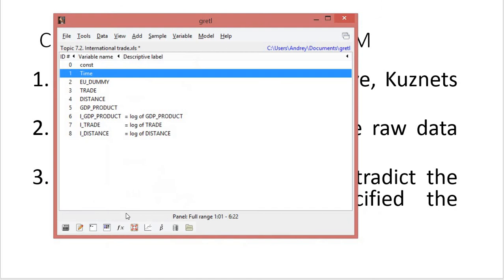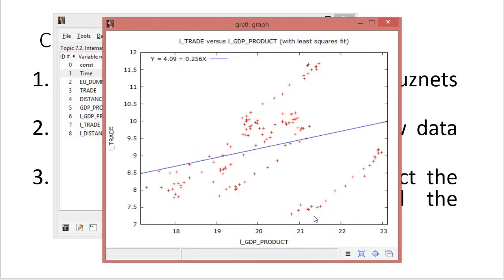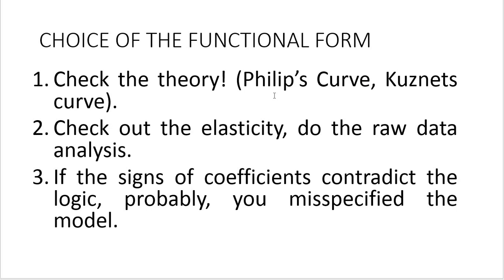So let us make another trial. And now we will analyze the relationship between natural log of trade and the log of GDP product. Here it is. So now it's actually possible to run the regression model. The results of estimation are statistically significant. And you can see the positive relationship between GDP product and trade. So this is just an example of raw data analysis.